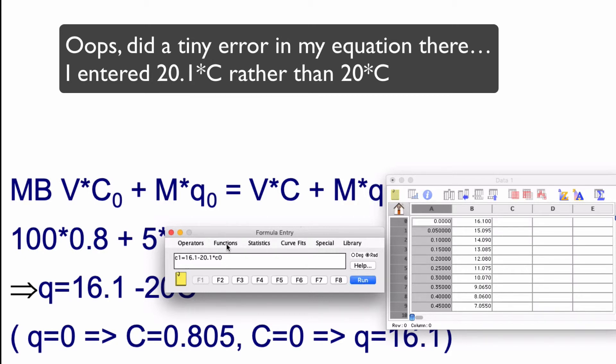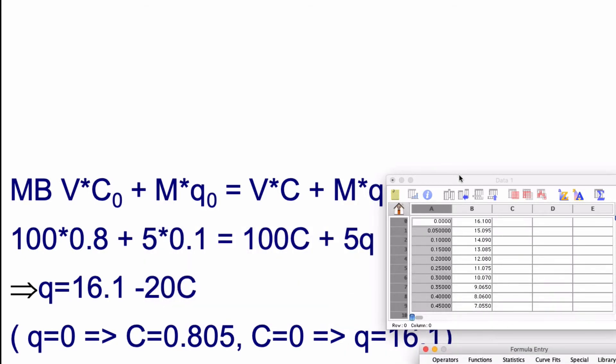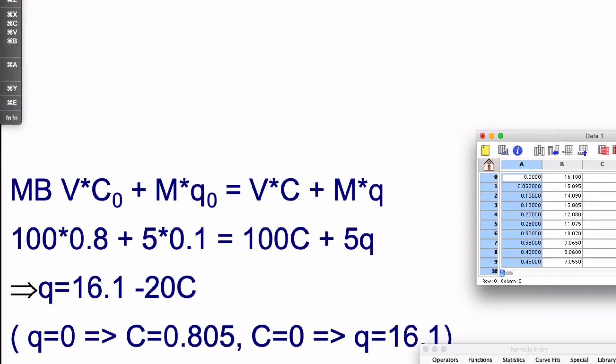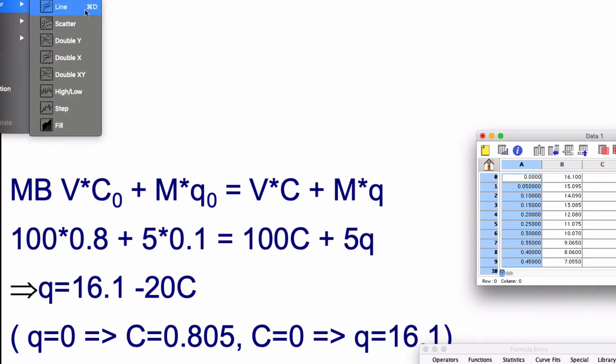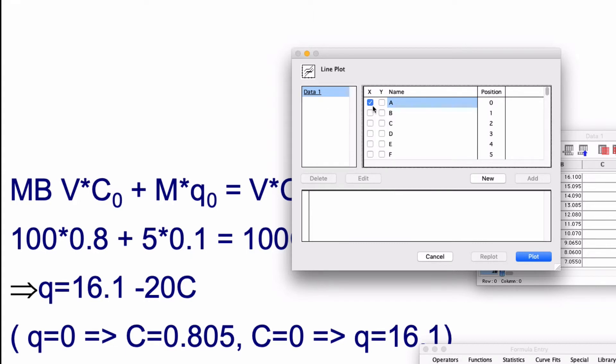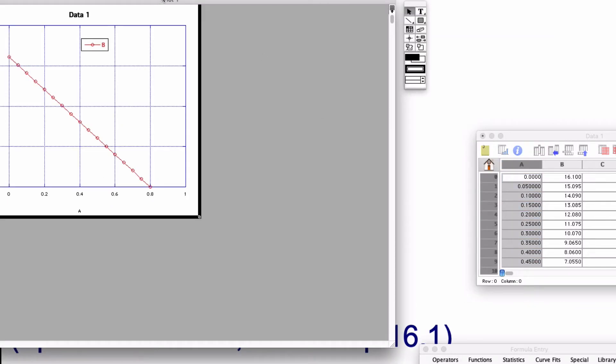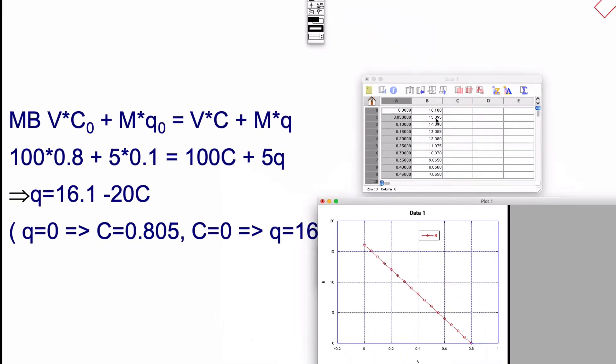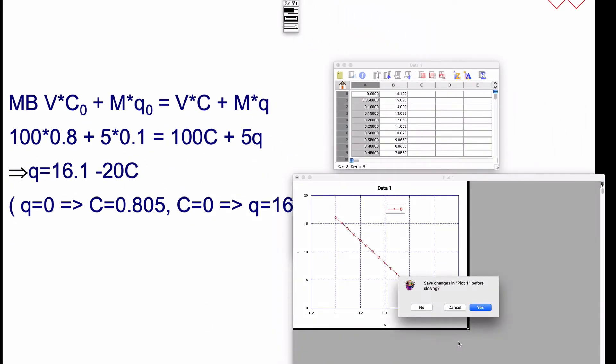This happens to be KaleidaGraph, you can do it in Excel or whatever, doesn't matter. Let's plot this. Plot it as a line. Let's call this C and this q, and then make the plot again.